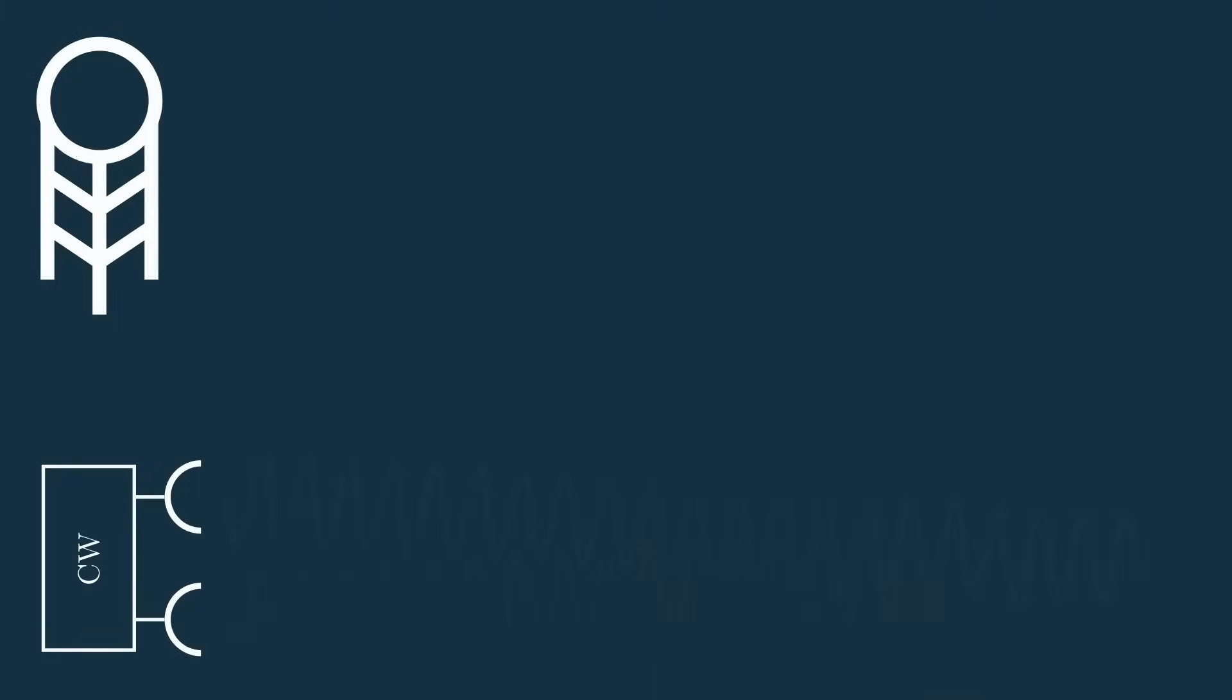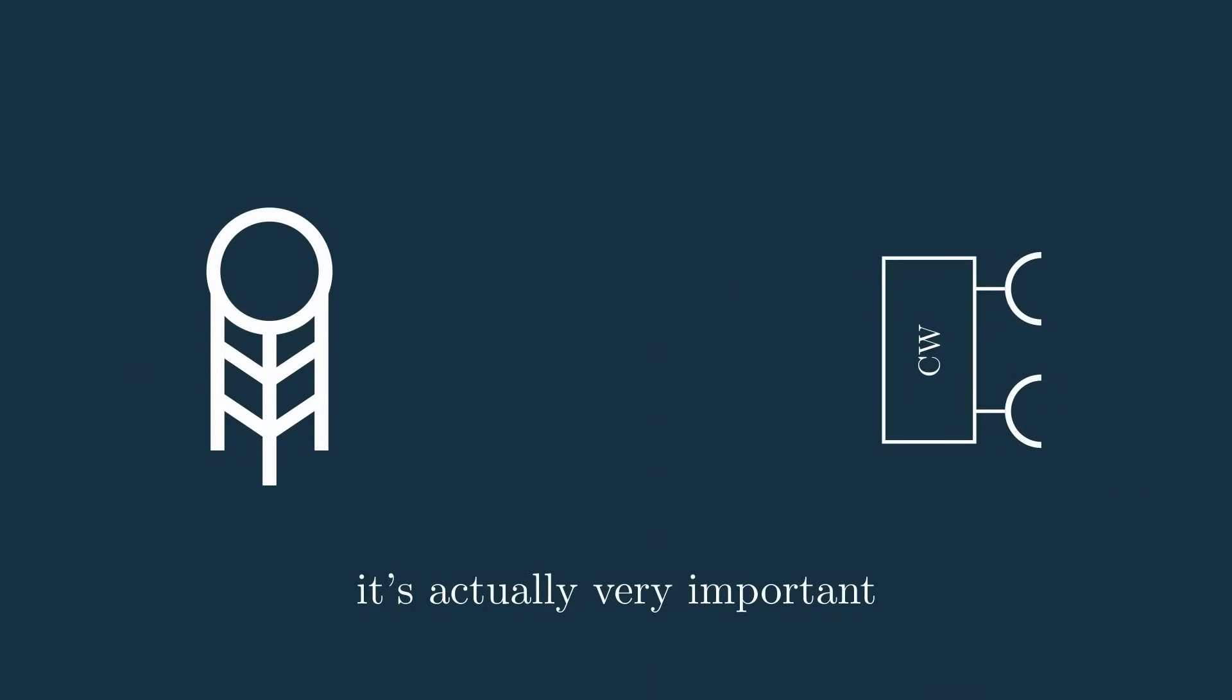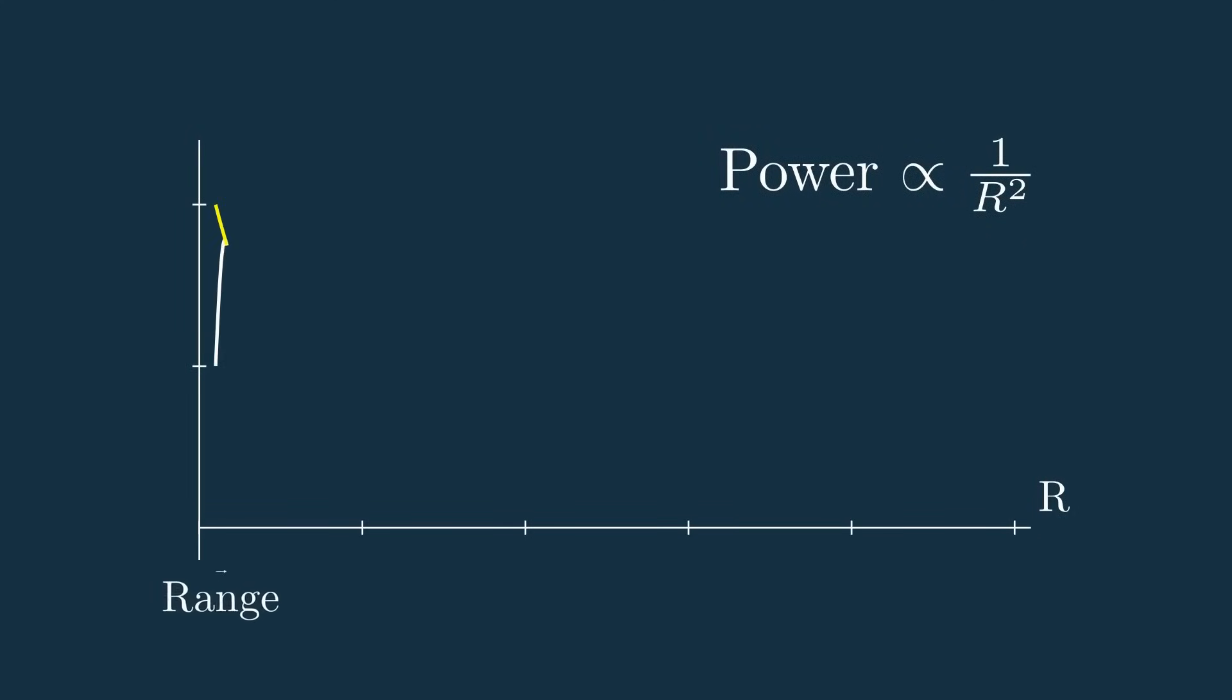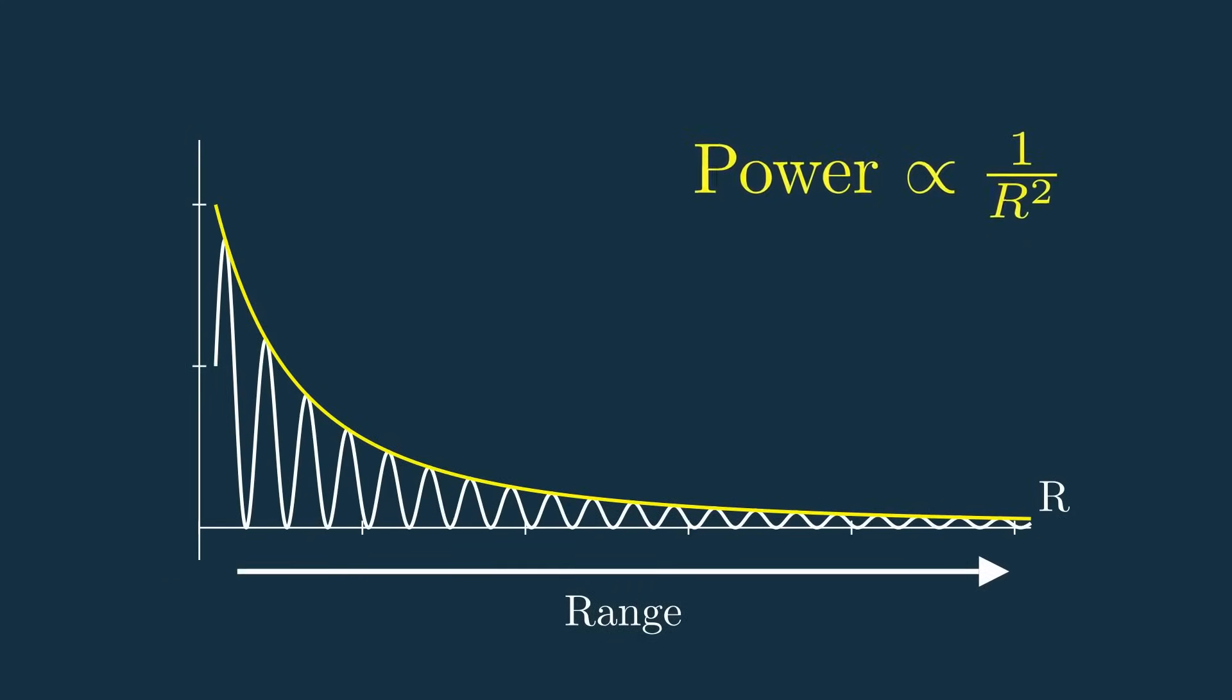This may seem like a pretty small distinction, but it's actually very important because it's where one of the main benefits of CW systems arise. See, a signal propagating through the air degrades heavily with distance traveled on the order of 1 over R squared, so the amount of power we transmit matters a lot.